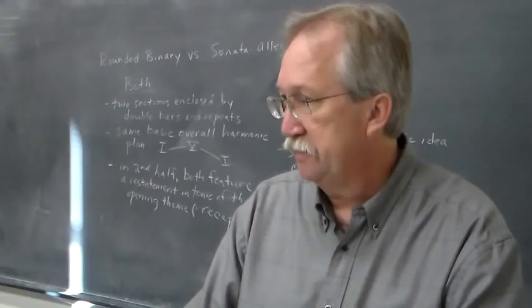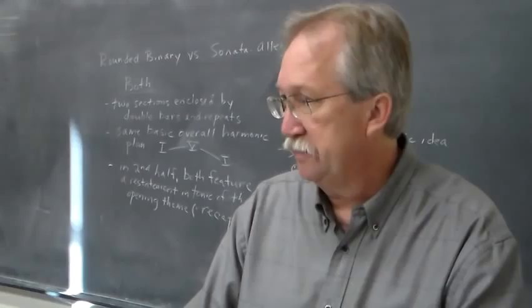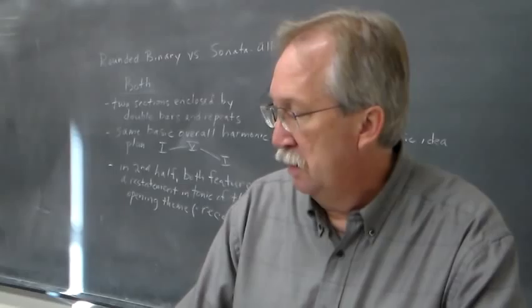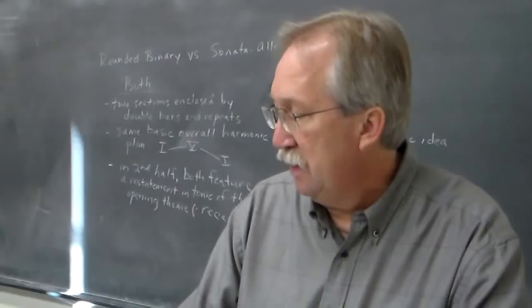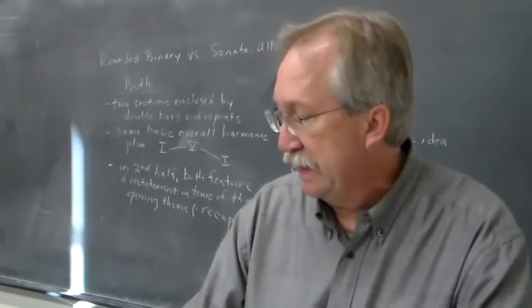So that was Op. 59 No. 1 by Beethoven and Op. 120 No. 2 by Brahms. You should know about the Franck violin sonata — it's a cyclic work. The opening idea of the first movement that the violin presents returns in each movement of this four-movement work.